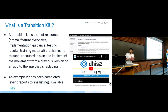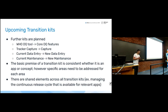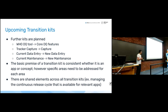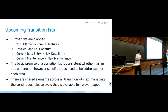Each transition kit is similar in terms of gathering resources but has specific areas of detail per application. For example, the data entry kit has more detail on custom forms. For event reports to line listing, the goal was to make the transition as smooth as possible — accounting for users who are very familiar with event reports and those who are not. Importantly, event reports is not fully replaced by line listing, so these apps need to work together: aggregate pivot tables stay in event reports while line lists move to the line listing app.